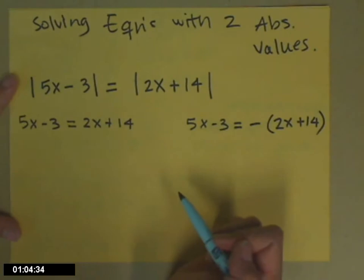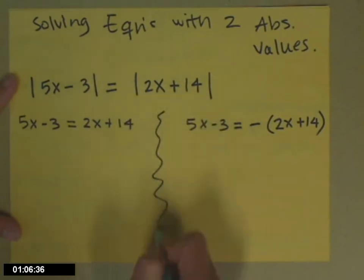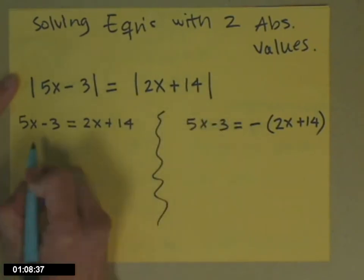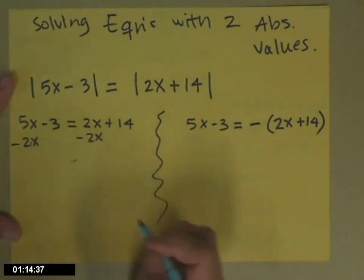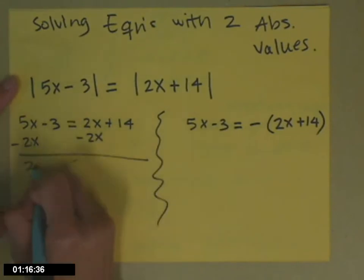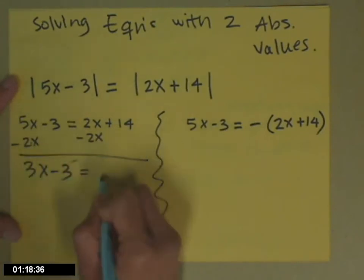So once you have your two equations written down, solve them independently. So subtract 2x from both sides. I'll go ahead and write it. So for those of you who like to see all the gray detail, that gets me to 3x minus 3 equals 14.